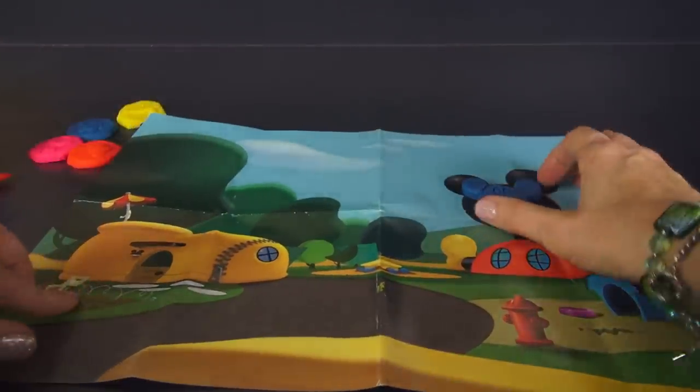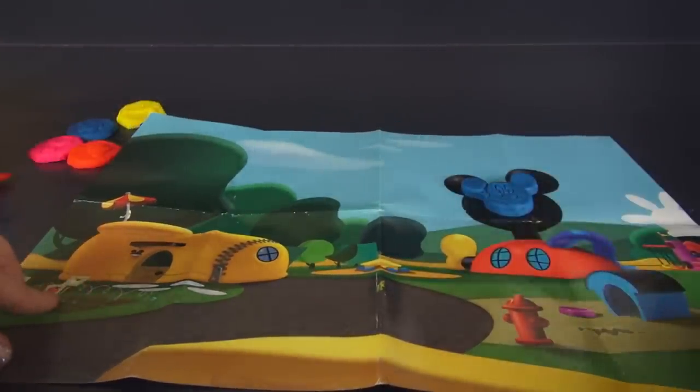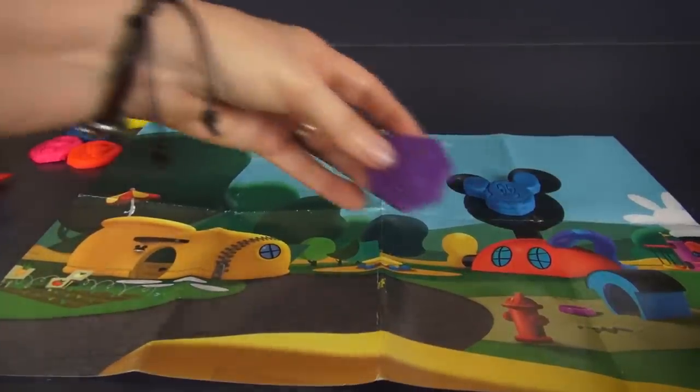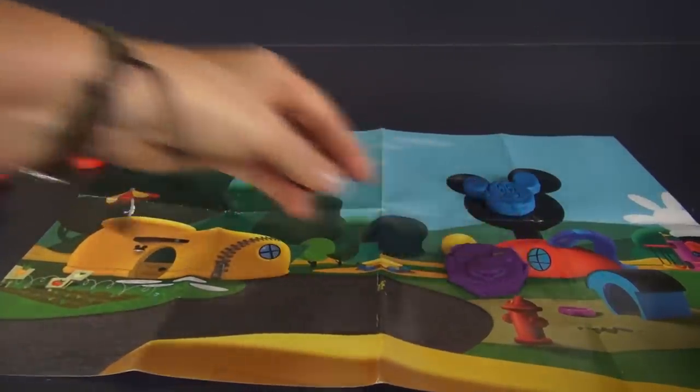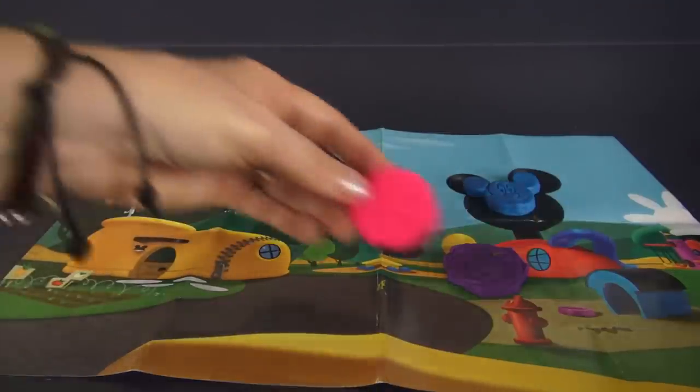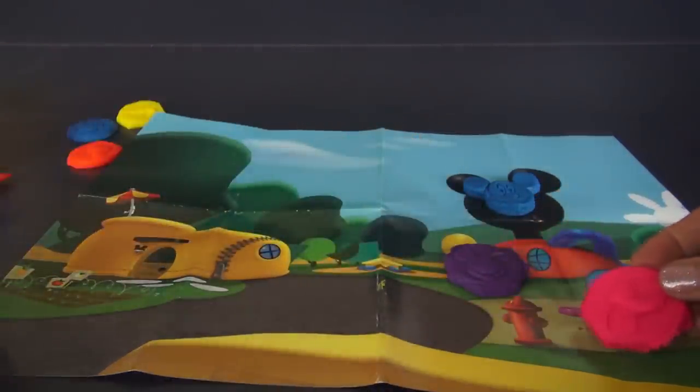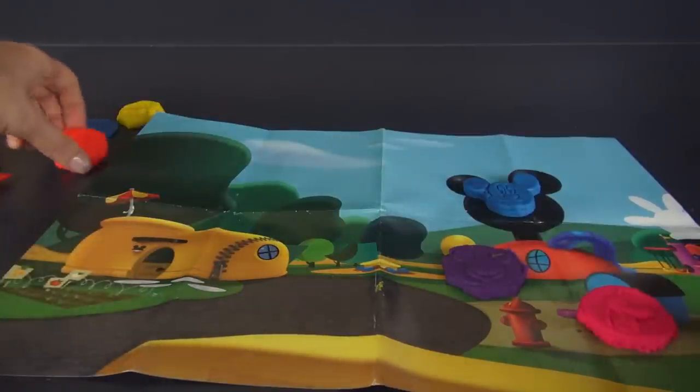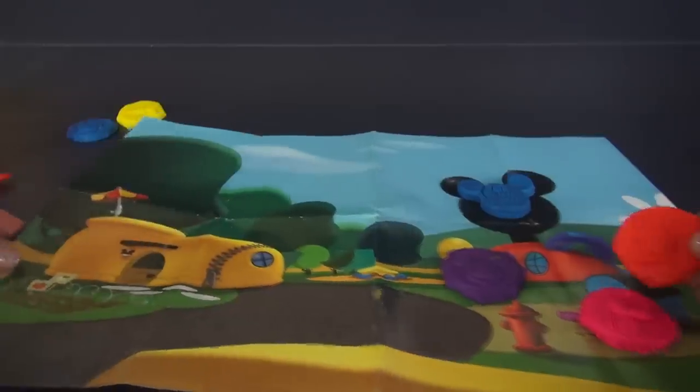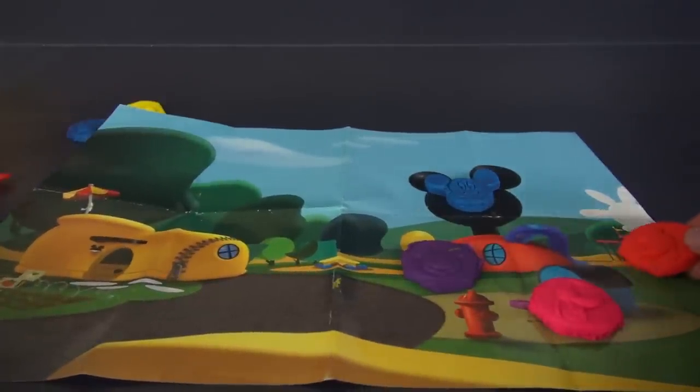I'm going to put Mickey Mouse right here on top of his clubhouse. And then the other Mickey Mouse that we made, I'm going to put in front of his clubhouse. I'm going to put Pluto at the doghouse. I'm going to put Donald over here. Sometimes I've seen him float off in that balloon shaped like a hand.